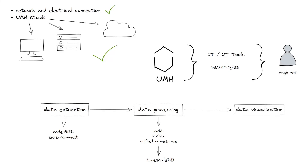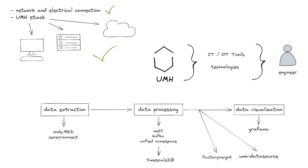Between the database and Grafana are two more elements. First, Factory Insight: Factory Insight awaits queries via REST API to then automatically extract and process the data from the database in the most performant way, and calculates among other things values such as OEE. Second, the UMH Data Source: the UMH Data Source is a plugin for Grafana that makes Factory Insight directly selectable in Grafana. By this, the data can now be visualized through Grafana and dashboards can be created very easily.